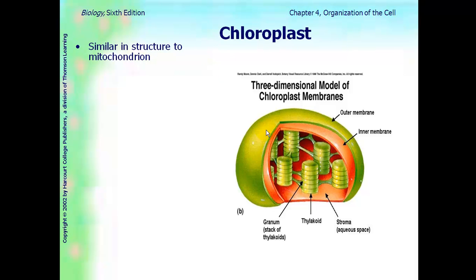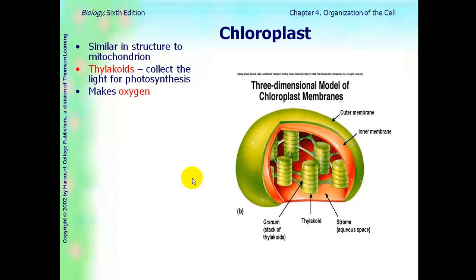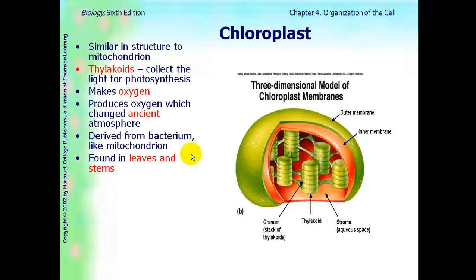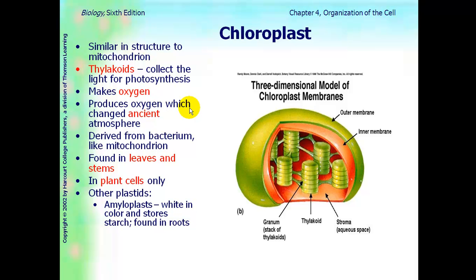Chloroplasts are similar to mitochondria — they have that same oval shape. Thylakoids are the little green discs that collect light for photosynthesis. Chloroplasts make oxygen through photosynthesis, which did change the ancient atmosphere. They are also derived from a bacteria cell and are found in leaves and stems, only in plants. Other plastids include amyloplasts, which are white, not green, and store starch — found in the roots of plants. Chromoplasts are another plastid that come in different colors.